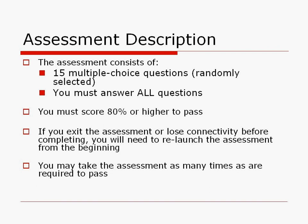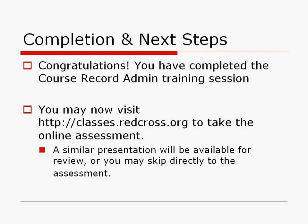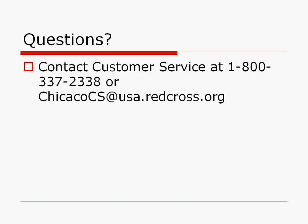After this training, if you wish to start entering course records, please contact us to ensure that you are linked to the correct organization and that you are marked to enter records under that organization. There is some setup required before you start. You can do that setup by contacting customer service at 1-800-337-2338 or at chicagocs@usa.redcross.org.